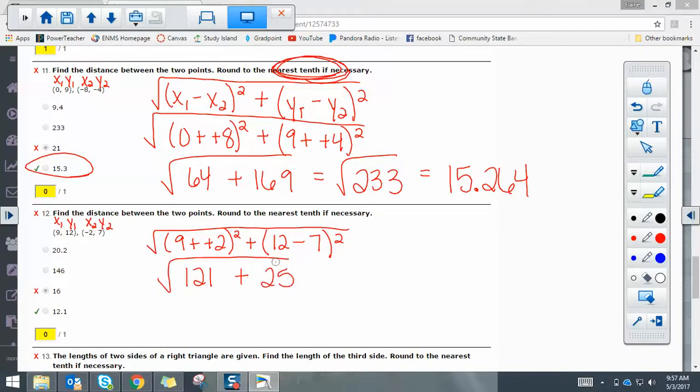So now I'm taking the square root of 121 plus 25, which is a square root of 146. 146 is not a perfect square. So you get 12.083, which rounds to 12.1.